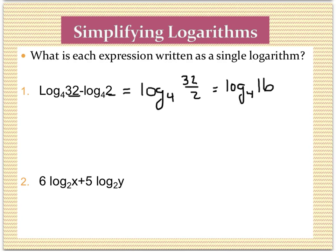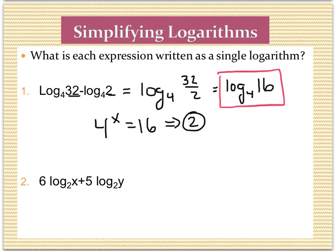If we wanted to evaluate — which the problem doesn't say to do, so we wouldn't keep going — we would say: 4 to what power gives me 16? So this log would actually equal 2. But the instruction said to leave it in single logarithmic form, so the condensed quotient form is the answer.